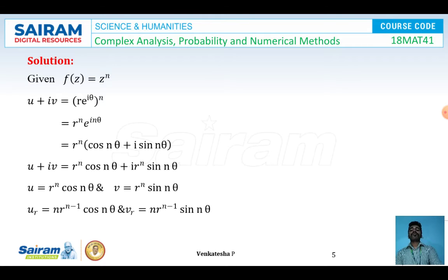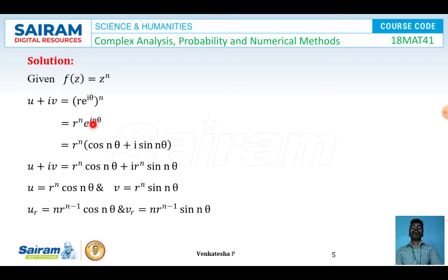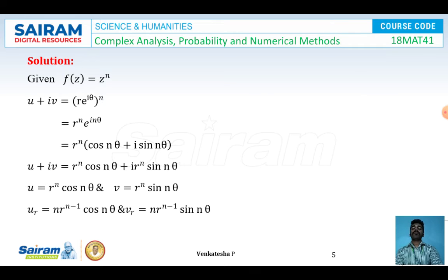We write f(z) = u + iv and substitute z = r·e^(iθ), giving u + iv = (r·e^(iθ))^n = r^n e^(inθ). Using Euler's formula, e^(inθ) = cos nθ + i sin nθ, so u + iv = r^n cos nθ + i·r^n sin nθ. Therefore u = r^n cos nθ and v = r^n sin nθ.